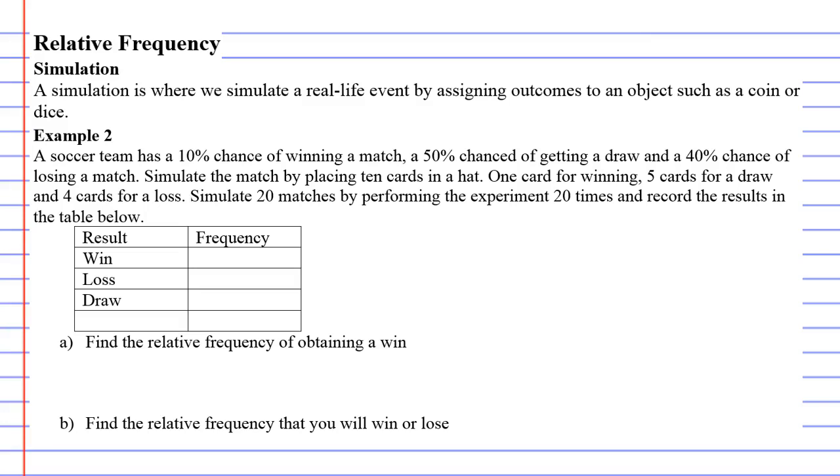To help illustrate this we'll look at example two. We've got a soccer team - this is our real-life event. This soccer team has a 10% chance of winning the match, a 50% chance of getting a draw, and a 40% chance of losing the match. We're going to simulate the match.